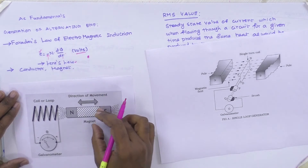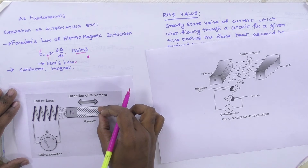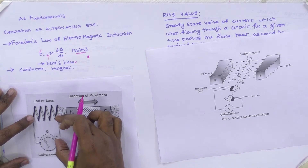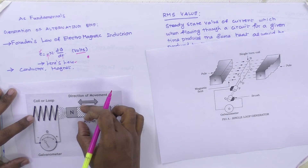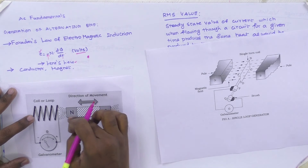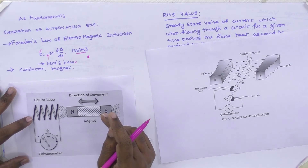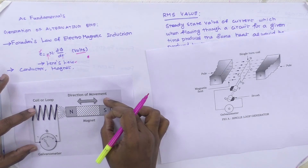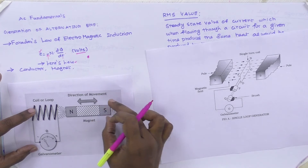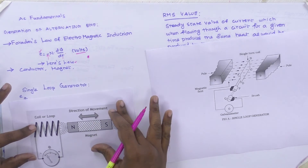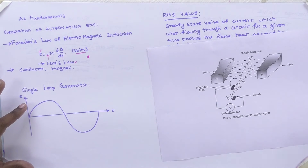Here we use one conductor, one magnet, and a medium. We can set either one as stationary and the other as moving. With respect to these two elements, we can create relative motion. Now we see the single loop generator and how the AC waveform is produced.